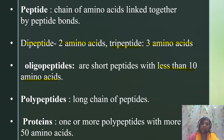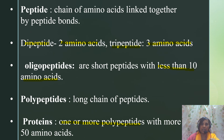A protein can consist of either only one polypeptide chain or more than one polypeptide chain. For example, lysozyme, which is an enzyme protein, is made up of a single polypeptide chain, whereas hemoglobin is a protein made up of four polypeptide chains. So a polypeptide with more than 50 amino acids that is a functional molecule is called a protein molecule.